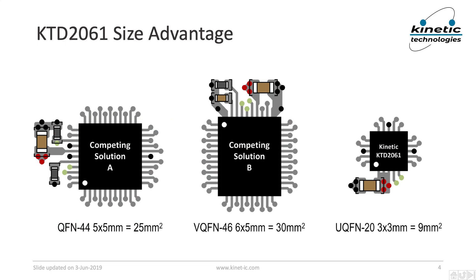This drawing is accurately drawn to scale. It shows the KTD 2061 on the right versus its two closest competitors. All three of these parts are intended to drive 36 LED channels, specifically 12 RGB modules. All these parts are in QFN packages. However, the KTD 2061 is about three times smaller. And due to its multiplexed output pins, it uses three times fewer PC board traces to the LEDs, which saves a whole bunch of routing space.